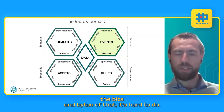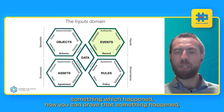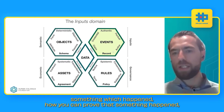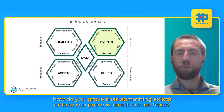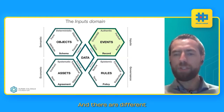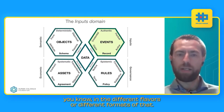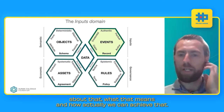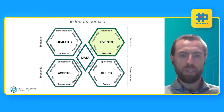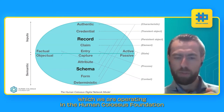The input domain is basically all about events — something which happened. How can you prove that something happened? How do you prove that something exists, or where it comes from? There are different activity characteristics around that in different flavors and formats, and I'd like to talk today about what that means and how we can achieve it — from the perspective of the model in which we operate at Human Colossus Foundation.